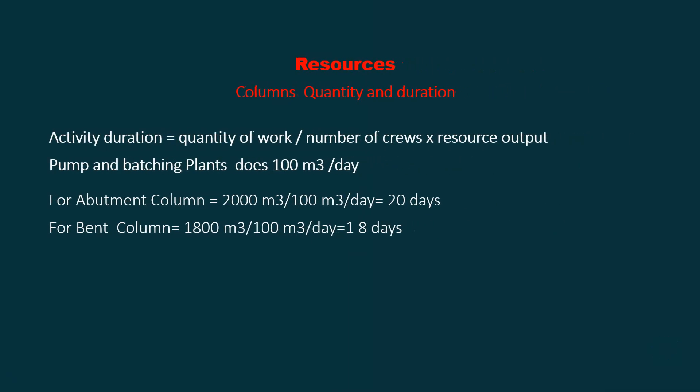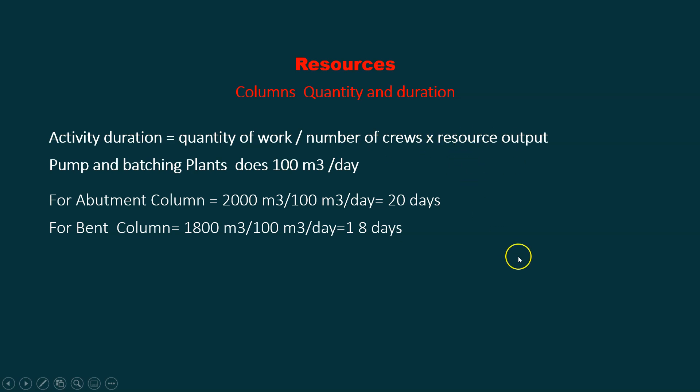For the abutment column, after you do the footing you're going to do the column. I have 2000 cubic meters divided by 100, giving me 20 days. For the bent column, I have 1800 divided by 100, giving me 18 days. It's easy — takeoff quantities divided by the number of crews and how much each crew can do.